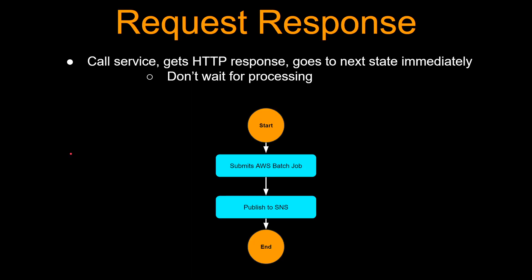Let's reuse the AWS Batch example. With the request-response integration pattern, step functions is going to call the service and gets a response, and then it will go to the next state immediately. Note that this HTTP response is just a confirmation that the job has been submitted — it doesn't mean the job is complete. So in this integration pattern, the SNS publish might happen even if the job did not complete.